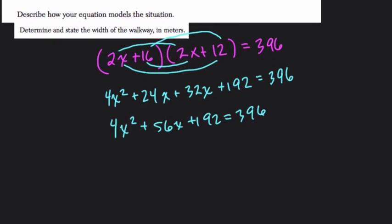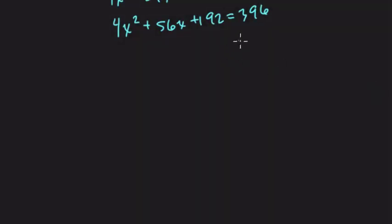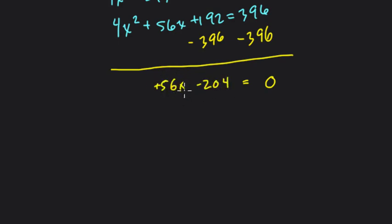So to solve this thing, what I want to do is get one side equal to 0. So at this point, I'm going to take 396 from both sides. I do that because I want to get 0 on one side and use that 0 product property. This is minus 204 plus 56x. And then we have 4x squared.